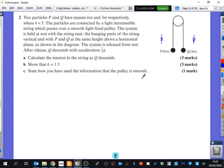The particles are connected by a light, inextensible string which passes over a smooth, light-fixed pulley. The system is held at rest with the string taut. The hanging parts of the string vertical and with P and Q at the same height above a horizontal plane as shown in the diagram. The system is released from rest. After release, Q descends with acceleration 1 third G.